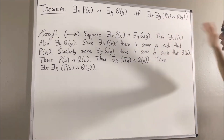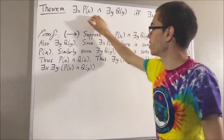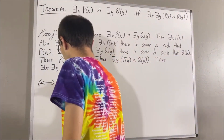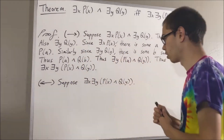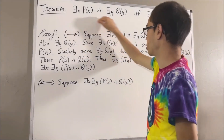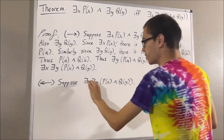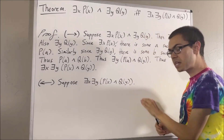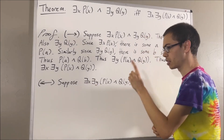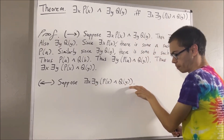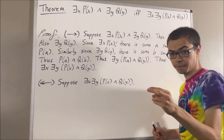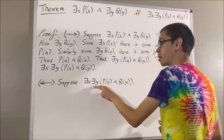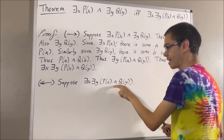Now we're going to prove the other direction. Let's prove if this is true, then this is true. And to do so, suppose this is true. The whole goal is to show that this is true. Now to start, since there exists an object x such that this statement is true, that means there is at least one object which makes this statement turn out true. I'll call that object c. So we're going to instantiate x to be the object c. So there exists an object y such that p of c and q of y.